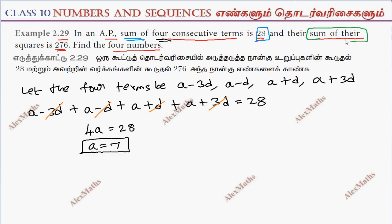Sum of their squares is 276. So a minus 3d whole square plus a minus d whole square plus a plus d whole square plus a plus 3d whole square equals 276.